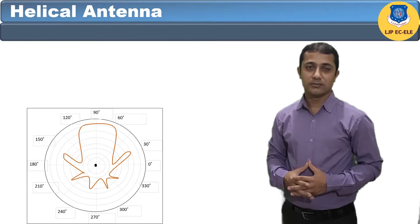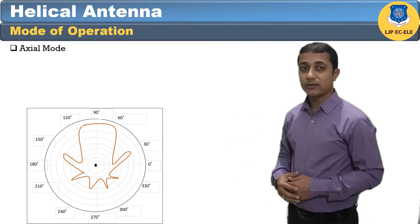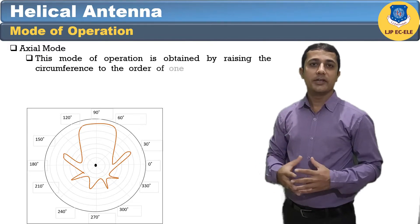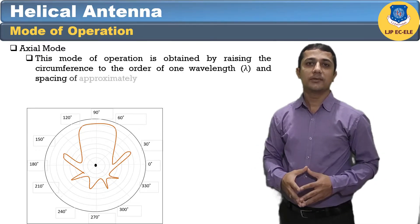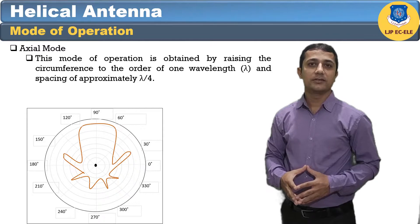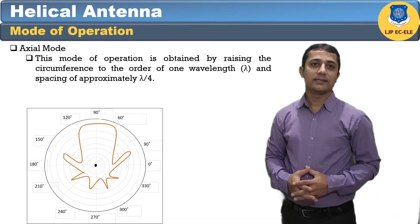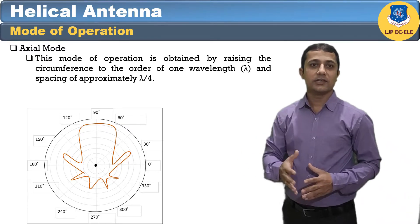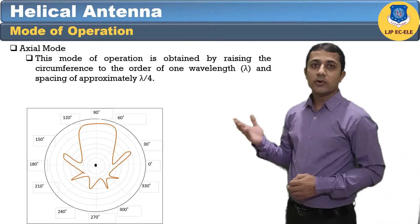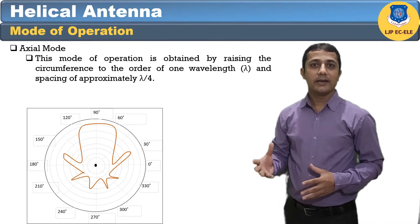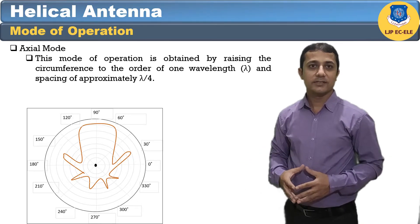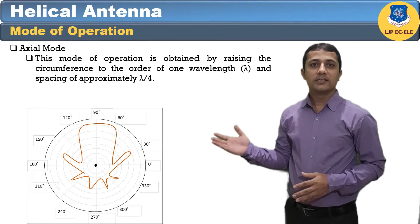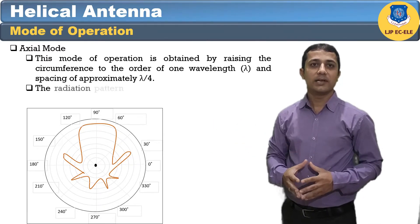The drawbacks of the normal mode of operation are low radiation efficiency and narrow beam width, hence it is hardly used. In axial mode, the radiation is in the end-fire direction along the helical axis and waves are circularly or nearly circularly polarized. This mode is obtained by raising the circumference to the order of one wavelength and spacing of approximately lambda by 4.